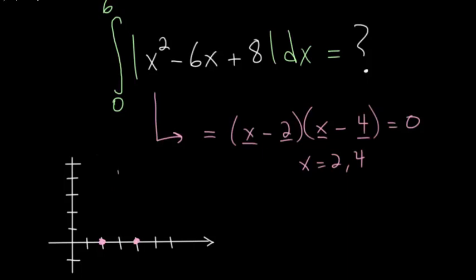We can plug in 3 into our function and evaluate it. 3 squared is 9 minus 6 times 3, which is 18, plus 8 gives us negative 1. So at 3, we have a y value of negative 1, and that is our vertex.